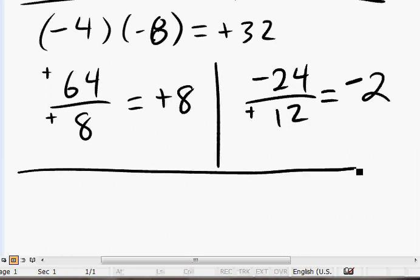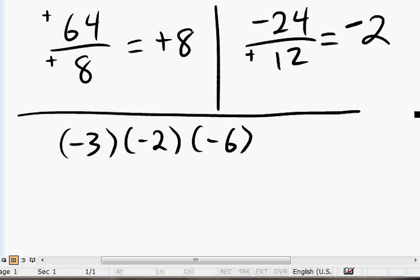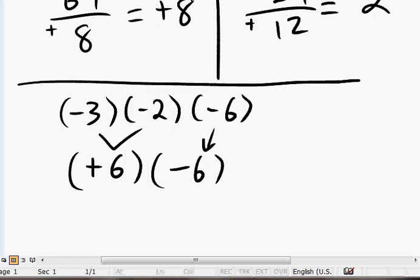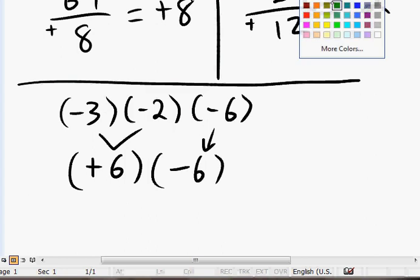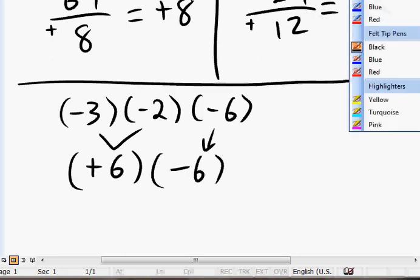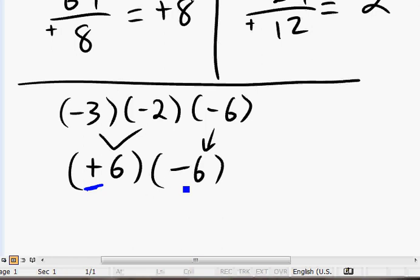One more. How about negative 3 times negative 2 times negative 6? In this case over here, we're doing two at a time. I'm going to do the first two first. Because they're both negative signs, the answer is going to be a positive. And then 3 times 2 is going to be a 6. Then you're going to carry the other one down, negative 6. We're still multiplying these two. And now we look at the signs. The first one's going to be a positive sign. Let me just fix the colors here. First one's going to be positive. Next one's going to be a negative, therefore different signs. You get a negative answer. It's negative 36.